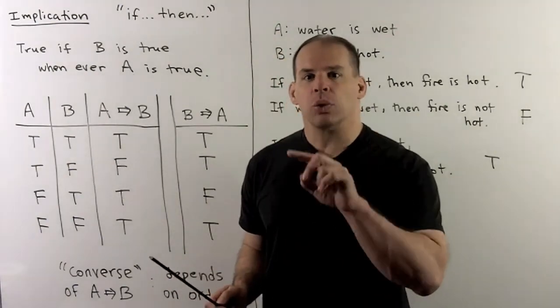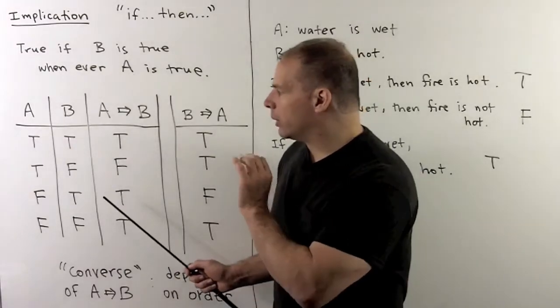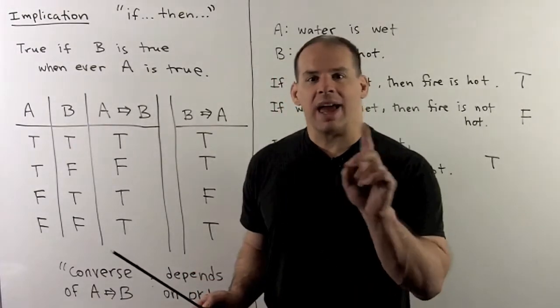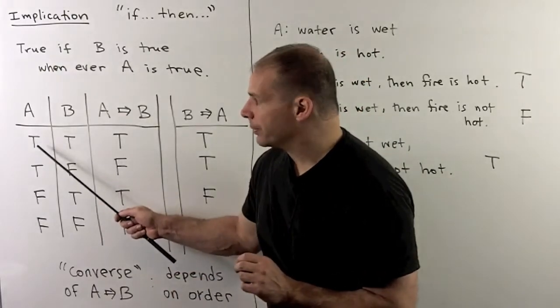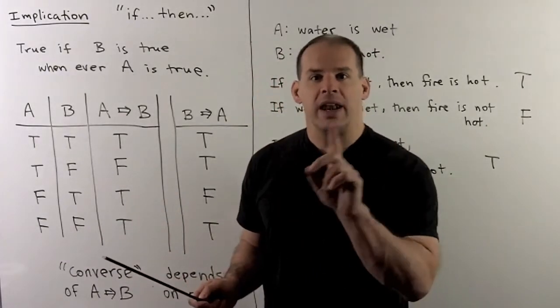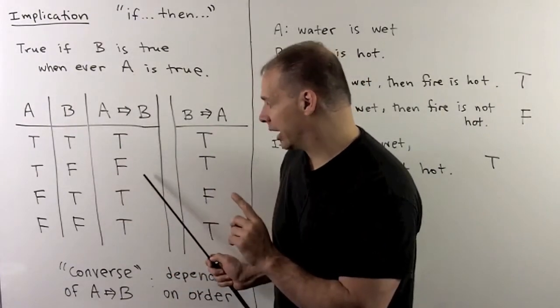Now, those last two rows, you might be wondering what's going on here. So note, what are we doing? When I check A implies B, we first check whether A is true or not. If A is true, then I have to check to see if B is true. So, the first two rows, the answer is clear.